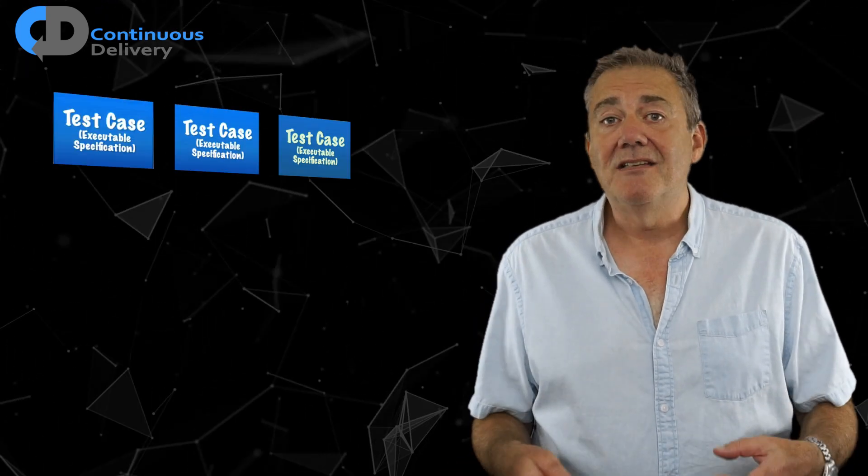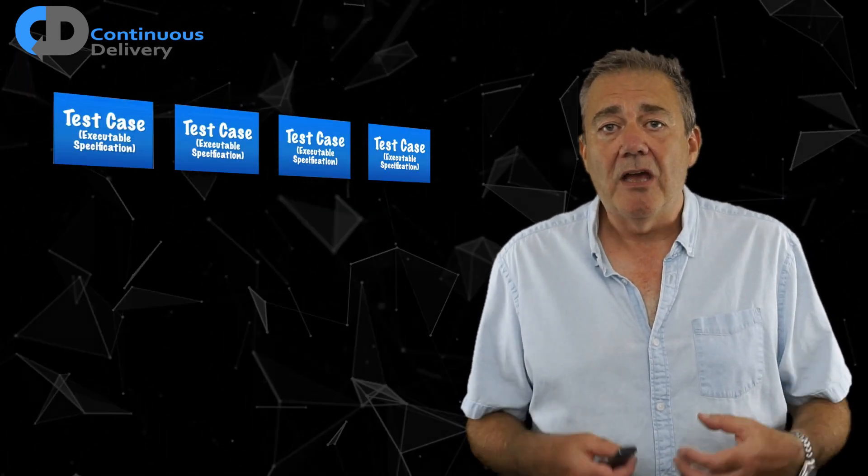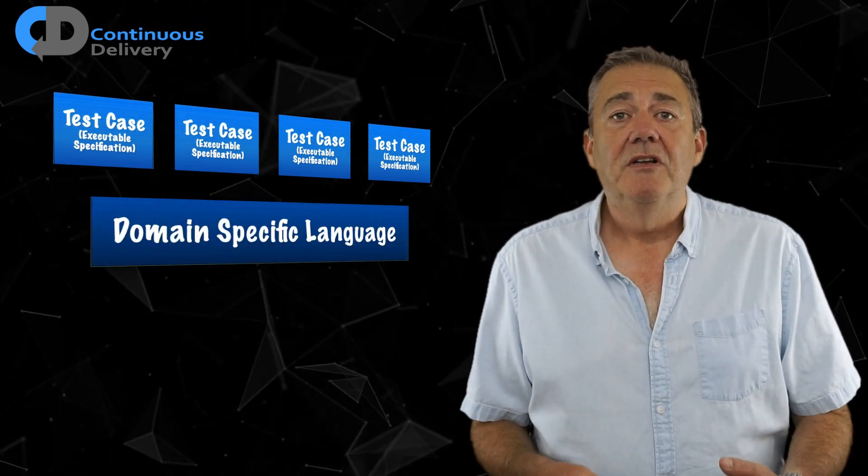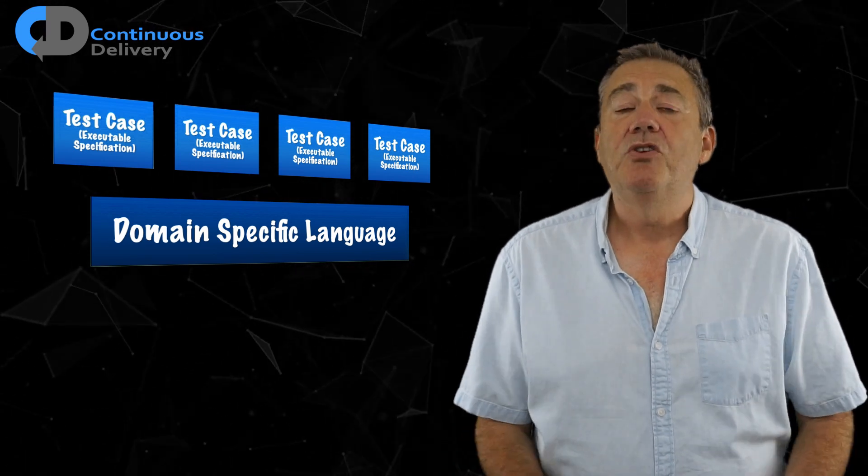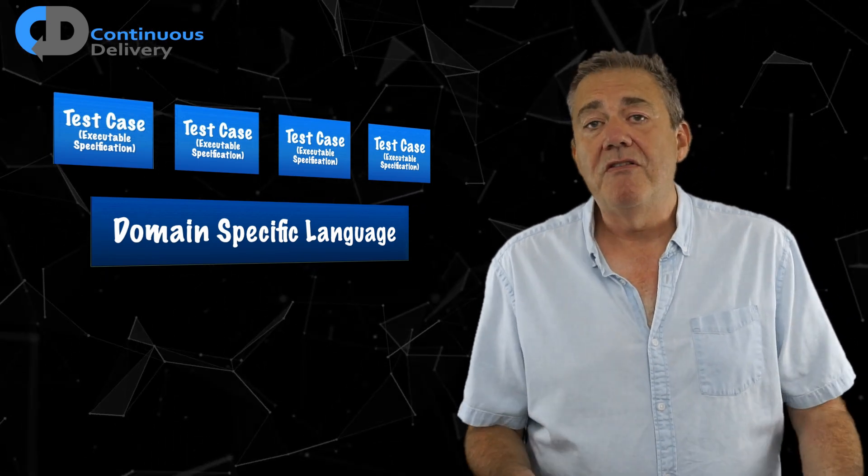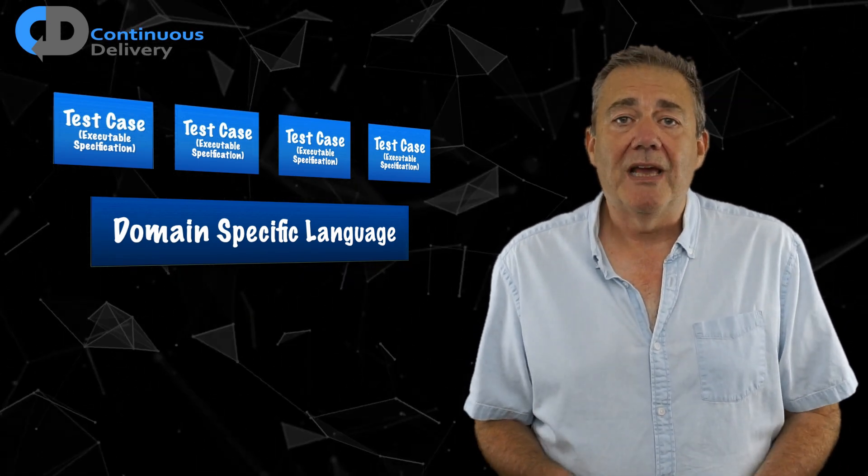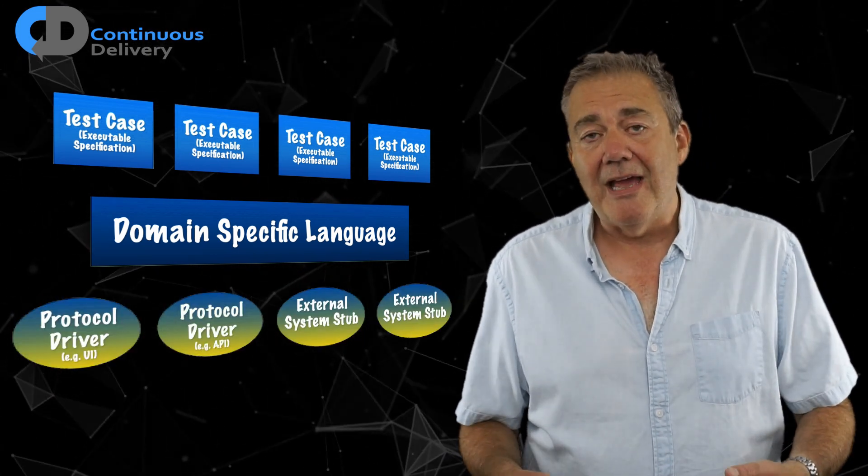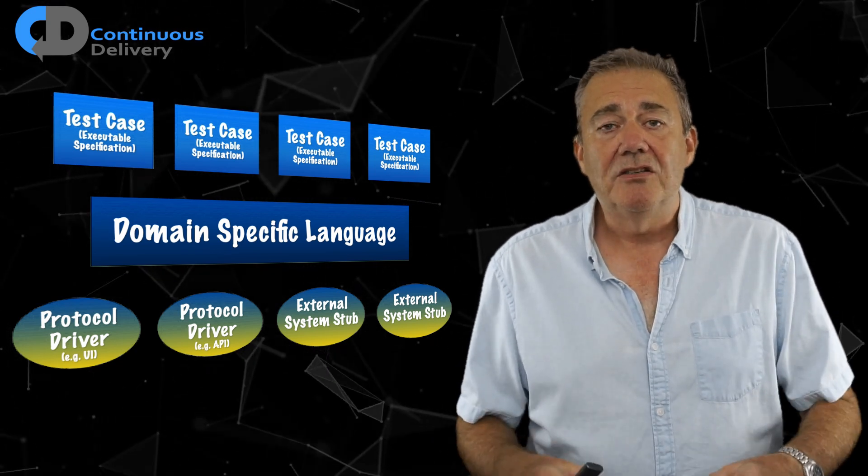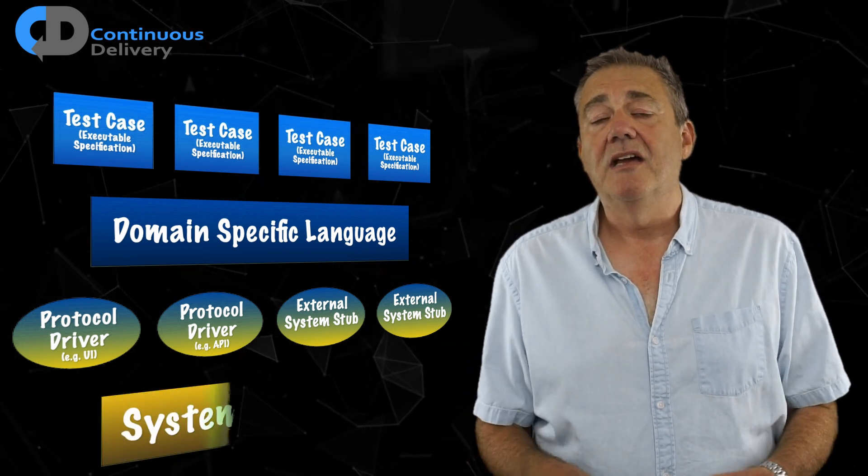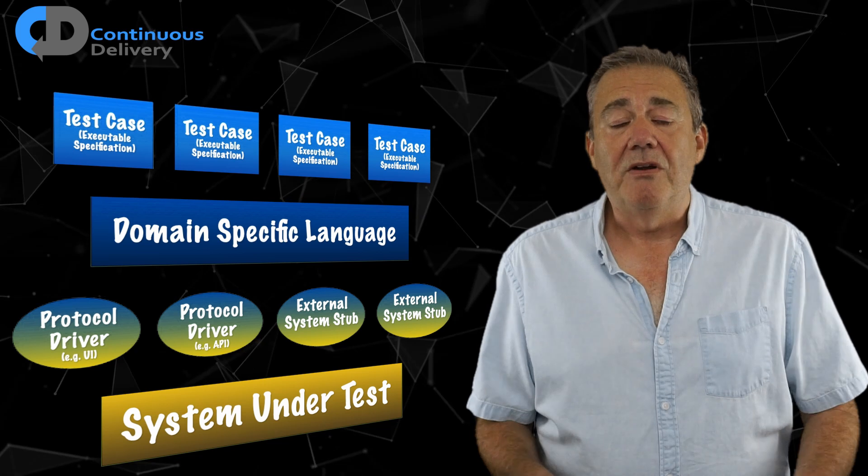To recap, the four layers are the test cases themselves in the language of the problem domain, only talking about what the system needs to do. The DSL, which allows us to put in optional parameters to be very precise in our specification of a case or very vague if we try to move quickly. It's optimized to allow us to write the test cases quickly and efficiently. The protocol drivers that translate from that abstract language of the problem domain into the language of the system so that we can interact with the system and actually test it. And then at the bottom of the stack, the system under test itself that we're evaluating.